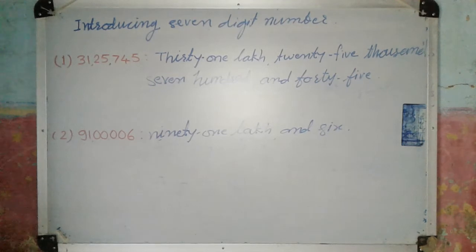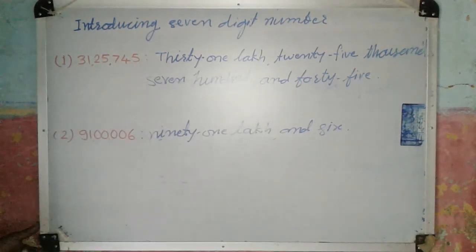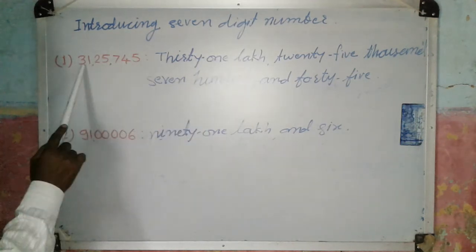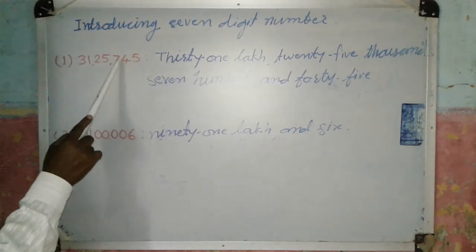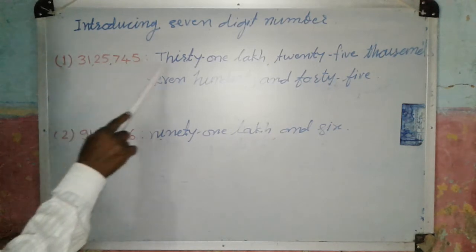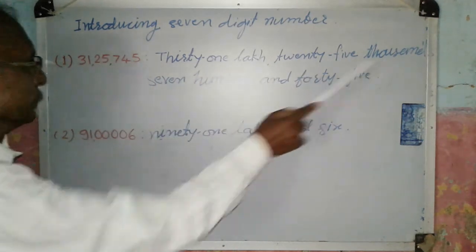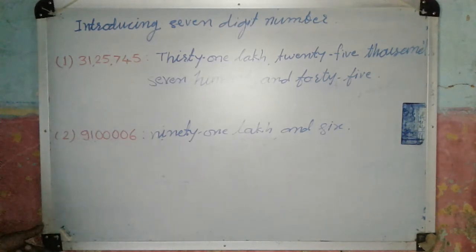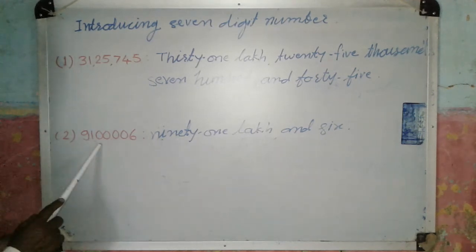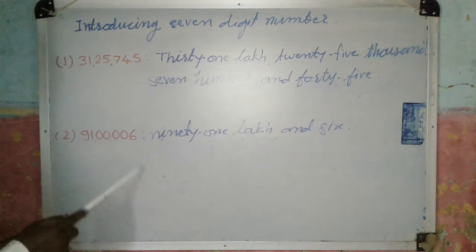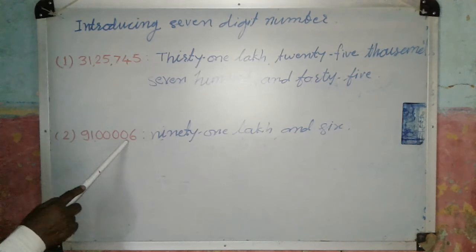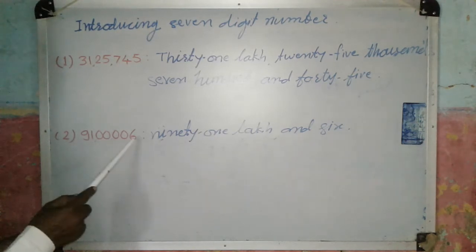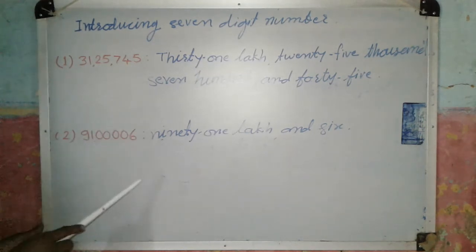Now we will read and write some 7-digit numbers. See here — 7-digit numbers are given. Here, 31 lakh — let's read: units, tens, hundreds, thousands, ten thousands, lakhs, ten lakhs. This next number is 91 lakhs and 6 — that means 0 tens, 0 hundreds, 0 thousands, 0 ten thousands. 91 lakh 6. In this way you can write 7-digit numbers.